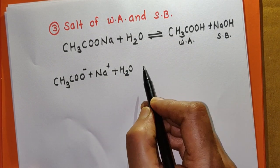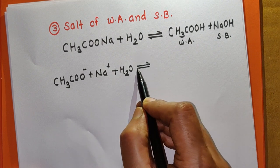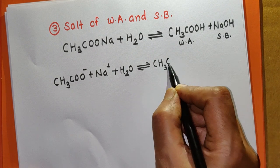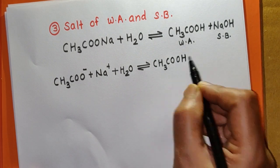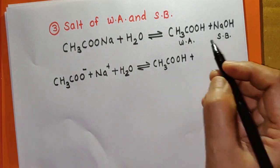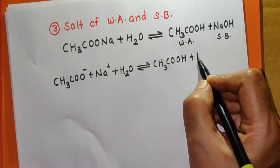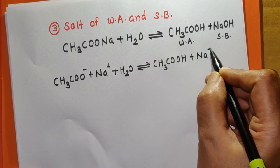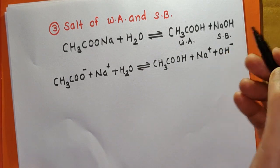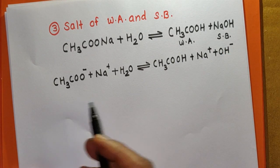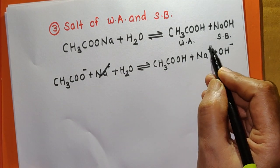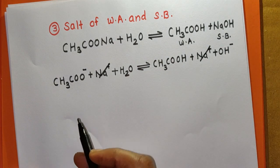CH₃COOH is a weak acid, so it remains mostly in the form of molecules. NaOH is a strong base, so it is completely in the form of ions, producing OH⁻ ions. In this reaction, Na⁺ ions appear on both sides, so Na⁺ ions will be cancelled.